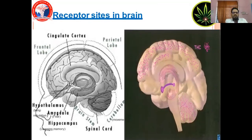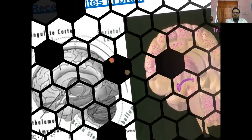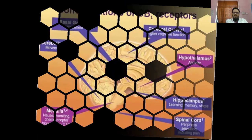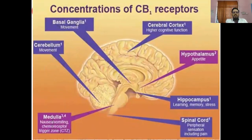Receptor sites in the brain: concentration of CB1 receptors in the basal ganglia, cerebellum, medulla, cerebral cortex, hypothalamus, hippocampus, and spinal cord.